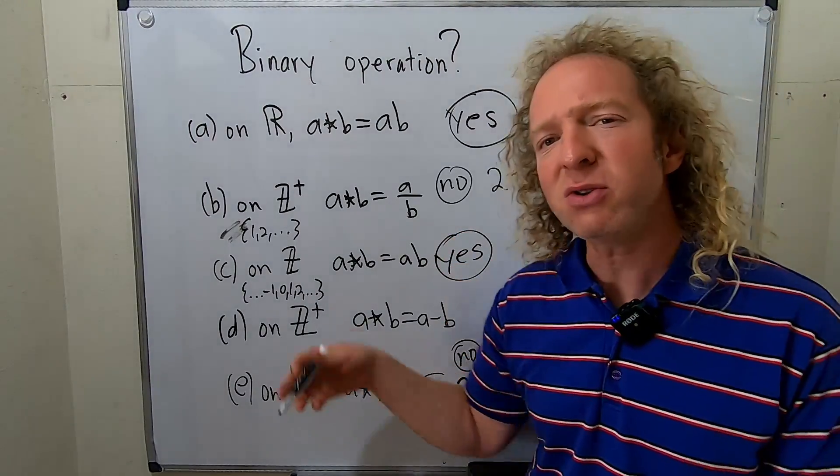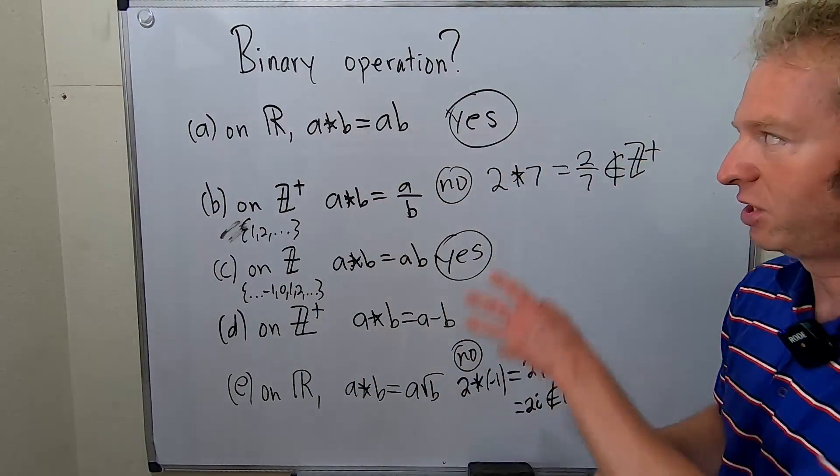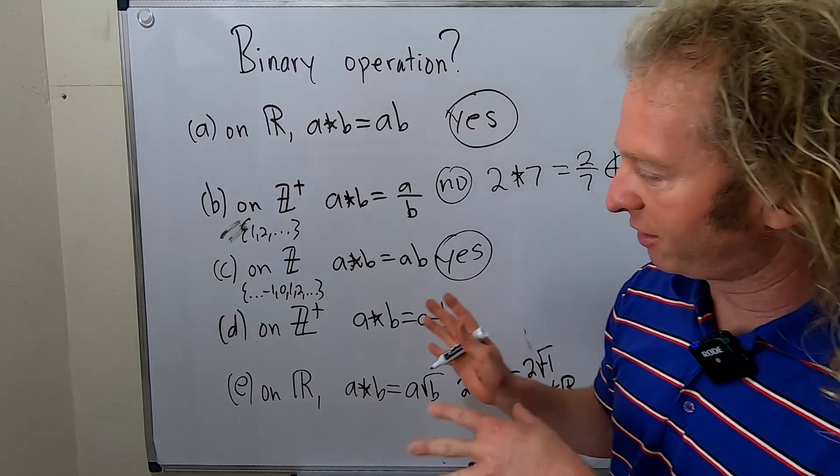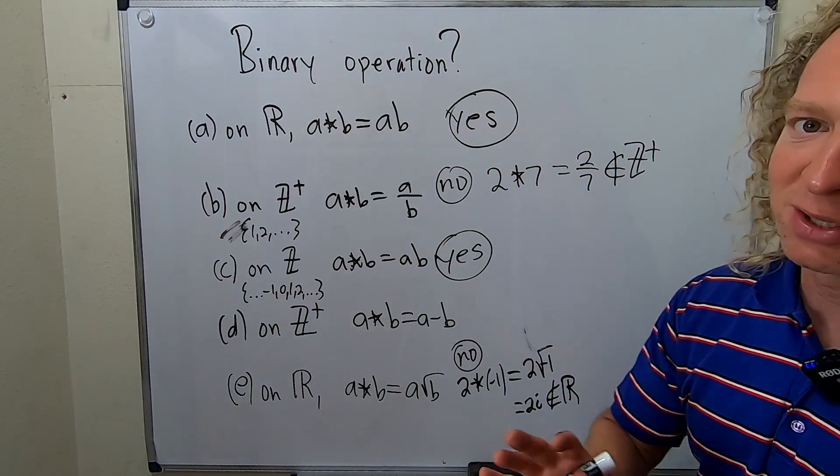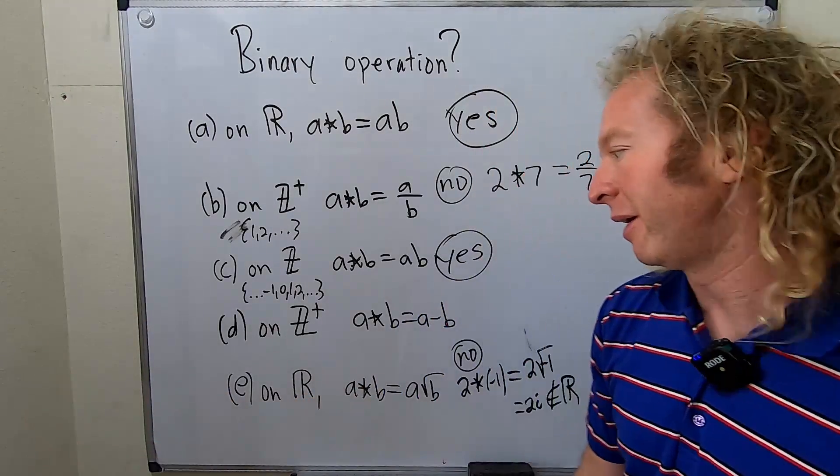Any two integers times an integer is always an integer. There's no issues there. Usually you don't have to prove stuff like this, the yeses. I mean, it's a little bit harder to prove. We rely on some really basic things that we typically just take them for granted so we can go further in math.